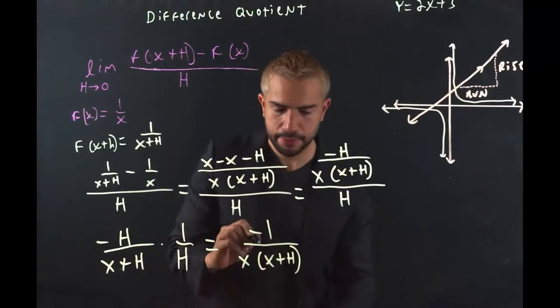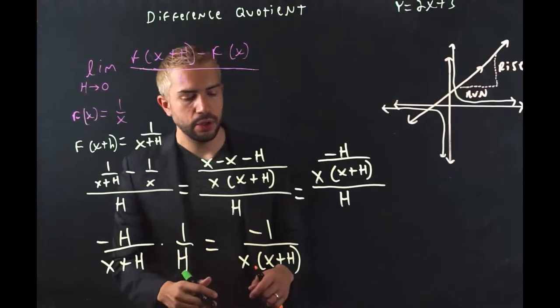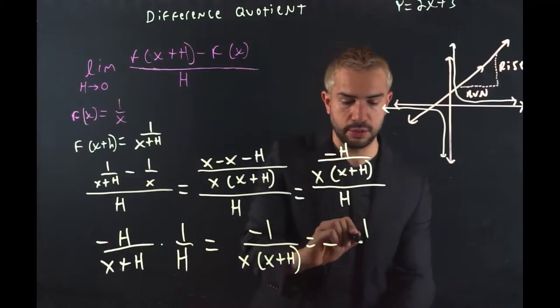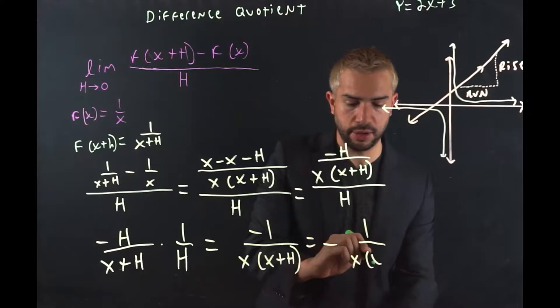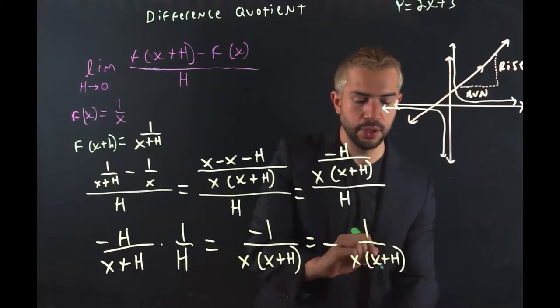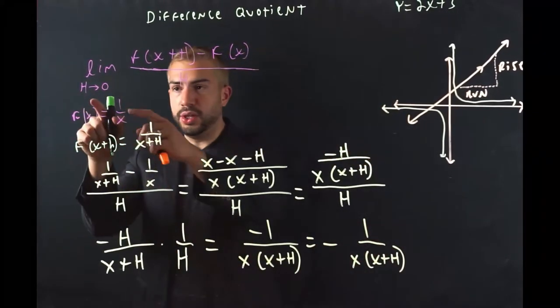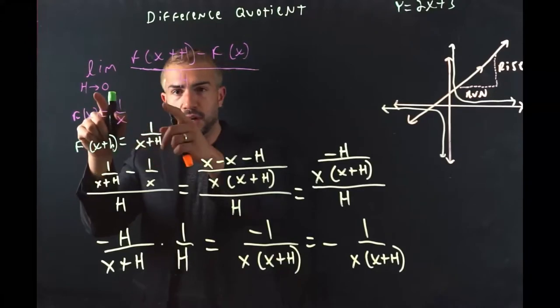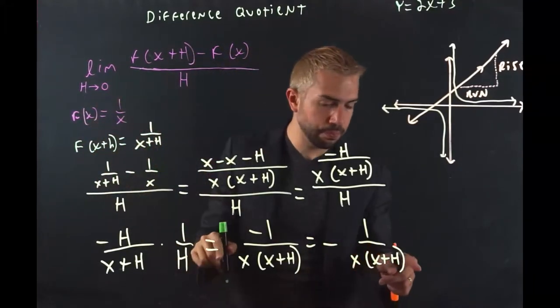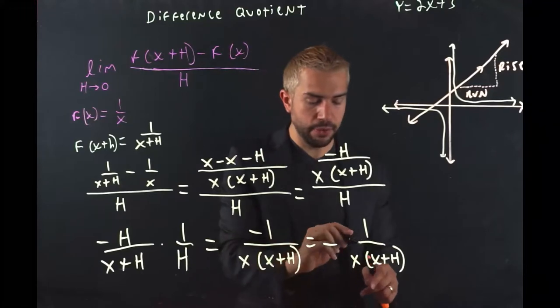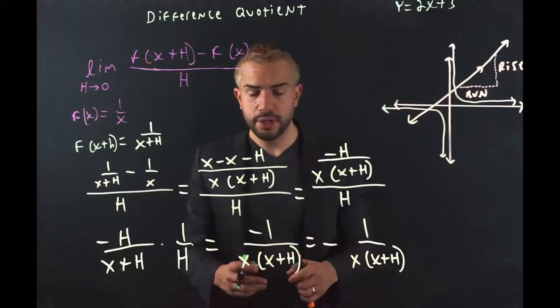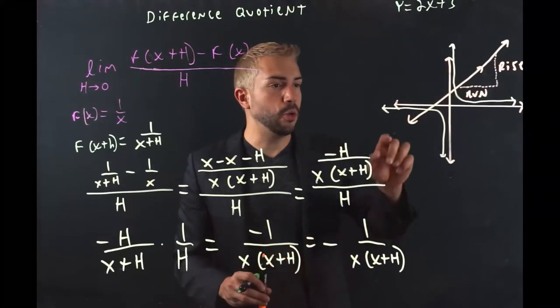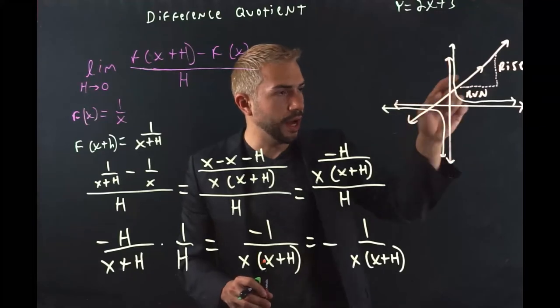And there you have it, our answer. Negative 1 over x times (x + h). Since we want to find the limit when h or the horizontal distance approaches 0, put in 0 for h. Essentially, you will get negative 1 over x squared. And that's how you can find the slope at any given point of our function.